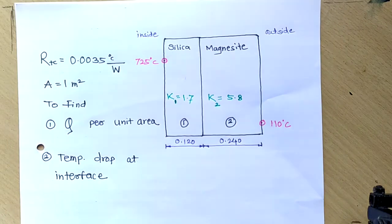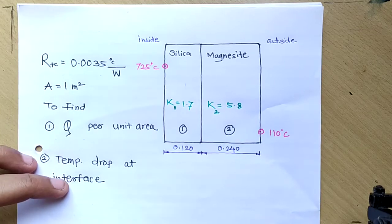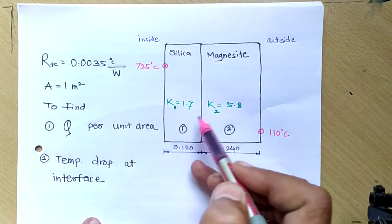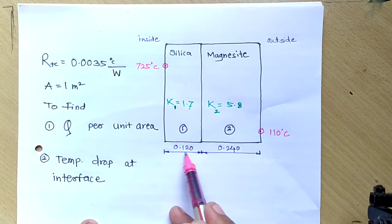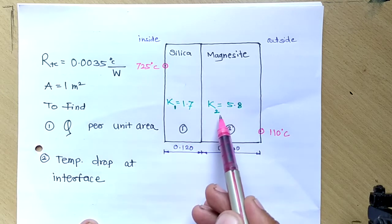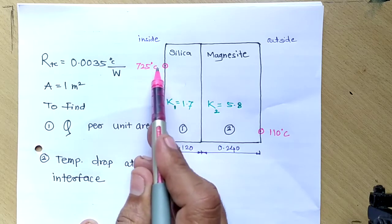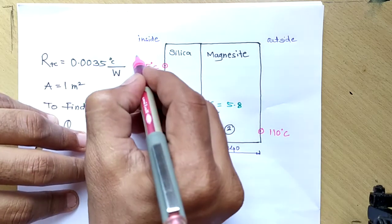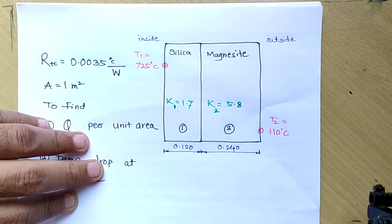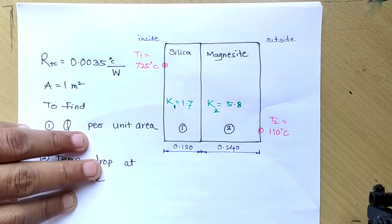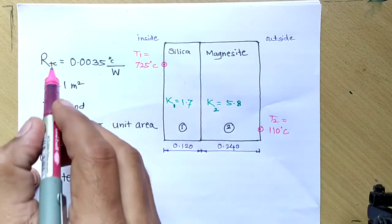Solving the problem is not difficult if you understand the given data. There is a silica and magnesite wall of a furnace. Silica thermal conductivity k1 = 1.7, thickness L1 = 0.120 m. Magnesite thermal conductivity k2 = 5.8, thickness L2 = 0.24 m. Inside surface temperature T1 = 725°C, outside surface temperature T2 = 110°C. Additionally, thermal contact resistance R_tc = 0.0035 °C/W is given.